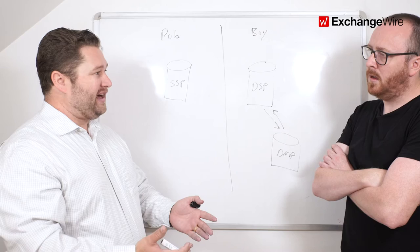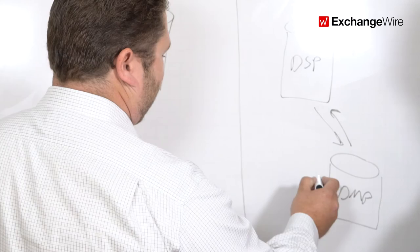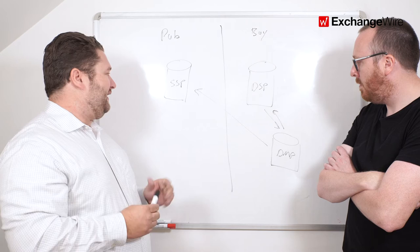So what we allow a buyer to do is actually take a particular audience from their DMP and sync it with OpenX. We call it audience escrow.